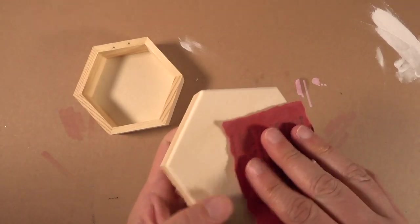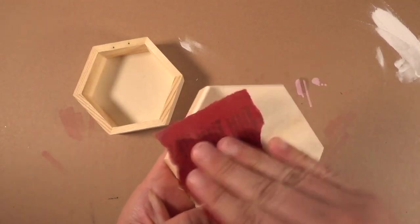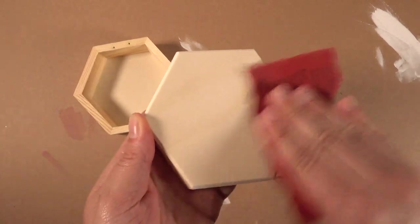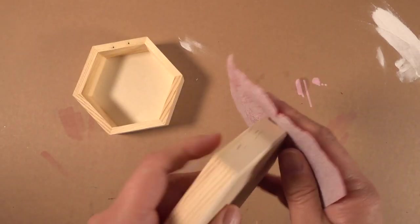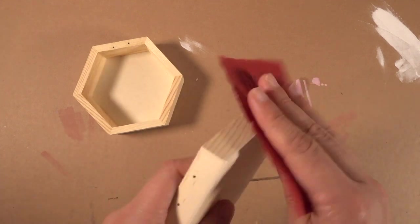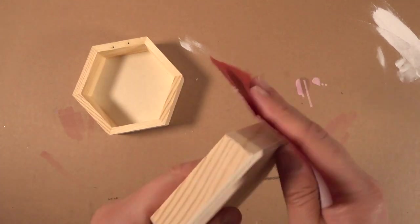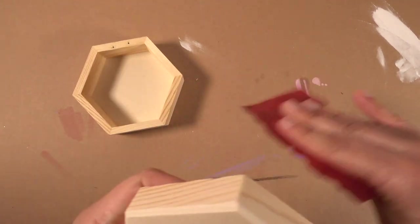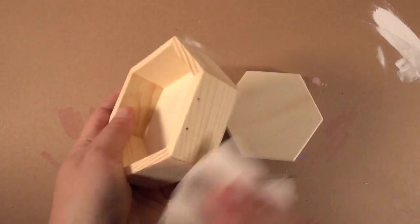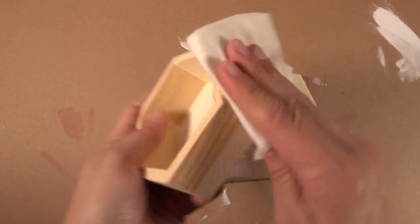So then I sanded the inside and the outside of the box with some fine grit sandpaper. This box is from the dollar store so it's not amazing wood quality, but sanding it down will help smooth it out and look a little bit better. It's easier for the paint to stick to also so it's a good idea to do this. Once it's sanded down you can use a wet paper towel or a cloth to just kind of wipe the dust off of it if you notice there's a lot.